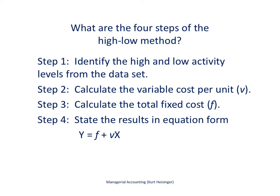This slide shows a summary of the four steps of the high-low method. We're going to go through each of these steps in detail with some data in the next few slides. But I wanted to give you a general idea of what these steps are before we do that. Step 1 is where we identify the high and low activity levels from the data set, the historical information that we will be using.